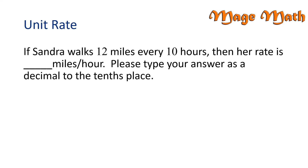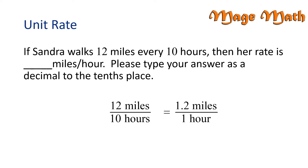If Sandra walks 12 miles every 10 hours, then her rate is blank miles per hour. Please type your answer as a decimal to the nearest tenths place. 12 miles every 10 hours can be written as this ratio. We are asked to write the answer as a decimal. 12 divided by 10 is 1.2, and our units are miles per hour. Therefore, Sandra can walk 1.2 miles in one hour. We say her rate is 1.2 miles per hour.